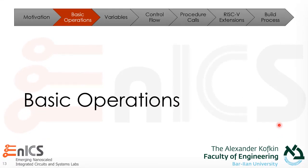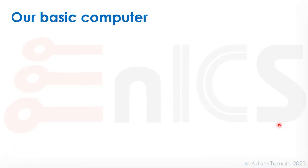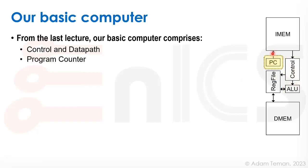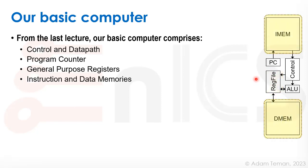Now we'll move over to the basic operations of a computer. From the last lecture, a basic computer comprises a simplified block diagram where we have the control and data path — the center of our CPU — the control logic that tells us what we're about to do, and the ALU which does the actual mathematical operations. We have the program counter pointing to the instruction memory, general purpose registers holding our operands, and the tightly coupled instruction and data memory.